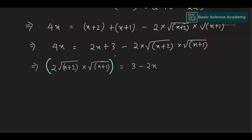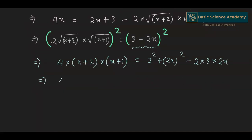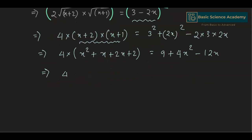Rearranging gives 2 times square root of (x+2) times square root of (x+1) equals 3 minus 2x. Taking the square of both sides gives 4(x+2)(x+1) equals (3 - 2x) squared, which expands as 3 squared + (2x) squared - 2·3·2x. So 4(x squared + 3x + 2) equals 9 + 4x squared - 12x, which gives 4x squared + 12x + 8 equals 9 + 4x squared - 12x.